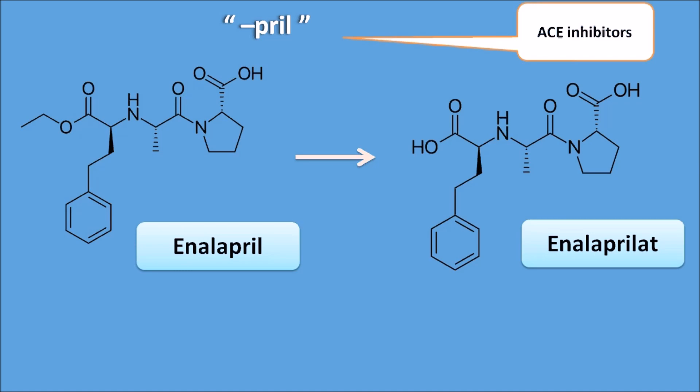In enalapril, the group shown here is the ester function, whereas in enalaprilat, the corresponding group is a carboxylic acid. By simple hydrolysis, enalapril is converted into enalaprilat, the active metabolite. That is why enalapril is called a prodrug — it cannot act directly but acts through its active metabolite enalaprilat.